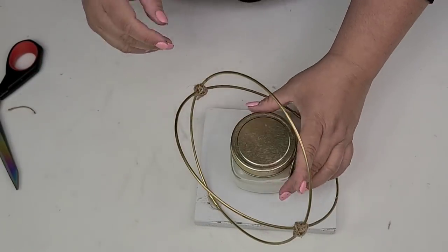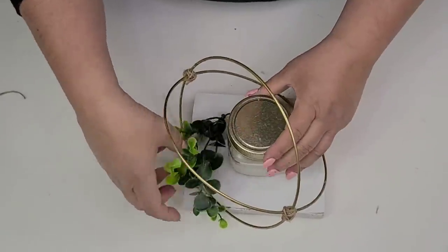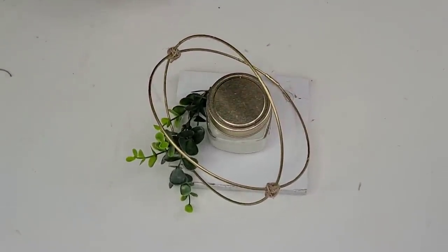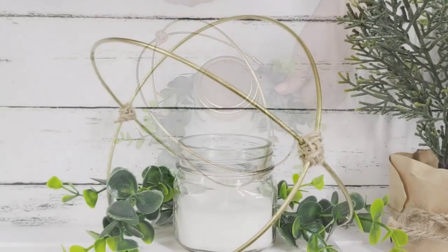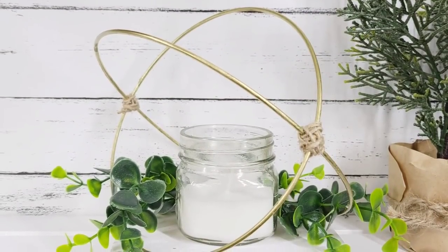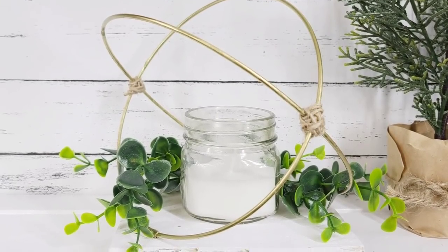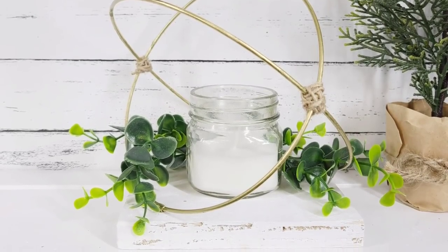All right. To finish it off, I added this little jar candle from the Dollar Tree. I think that the lid matches perfectly the rings. Then I added some boxwood to finish it off. Gave it a super cute farmhouse glam kind of look. I love the way it turned out. But I think my favorite is the first one with the mason jars. Let me know in the comments down below which one is your favorite and why.